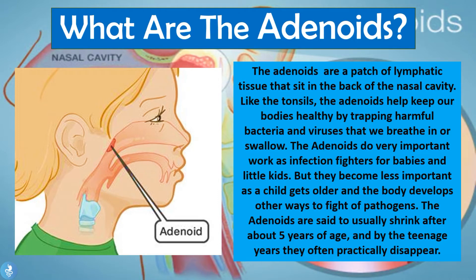I did actually do a video on tonsillitis and I will put a link for it in the description. The adenoids, like the tonsils, are structures of lymphoid tissue that defend the body against bacteria and viruses that we come into contact with either via the nasal cavity or the oral cavity. So anything that we breathe in or take in via food that is contaminated with bacteria and viruses, the adenoids and tonsils actually help to fight against these from causing us harm.